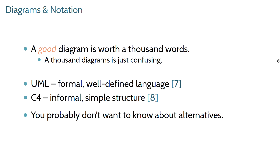C4 is another notation that's gained popularity in the last five or so years. It's popular primarily because it's simple, and it's simple because it's informal — a fairly simple set of diagrams with few parts and very simple relationships. There's no formality defining all the fine rules because that's not the purpose. The purpose is to have a simple way of sketching out an architectural diagram and describing key things in a way everyone understands without worrying about getting all the rules correct.